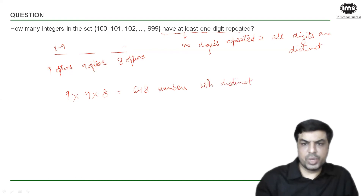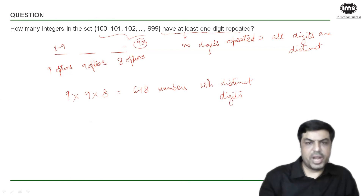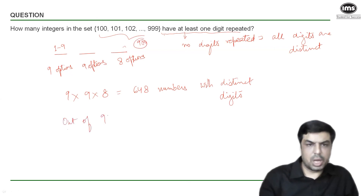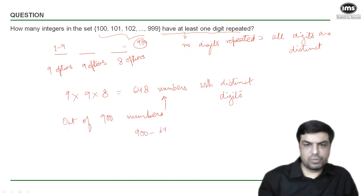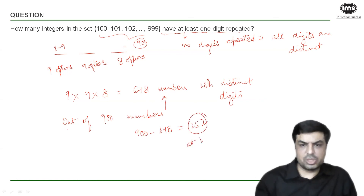Total numbers in the set from 100 to 999 is 900. Out of these 900 numbers, 648 have all distinct digits. Therefore, 900 − 648 = 252 numbers have at least one digit repeated — which is our answer.